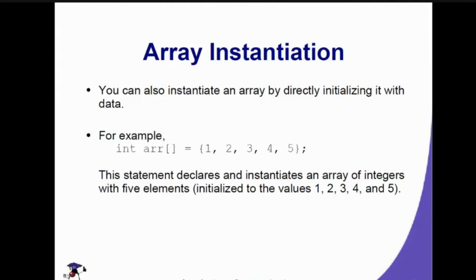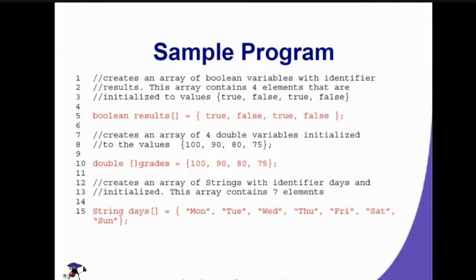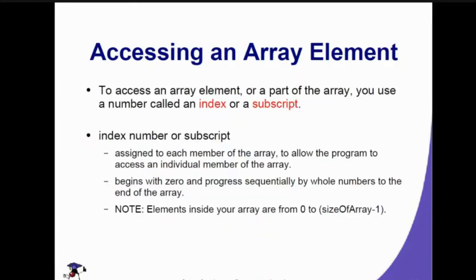In this example, if we have results as boolean we have {true, false}, and we have grades which is {100, 90, 80, 75} as an array, and also the string array days with {Monday, Tuesday, Wednesday, Thursday, Friday, Saturday, Sunday}. With these seven elements, we can already access each value — for example, days index 0 is Monday, and days index 6 is Sunday.